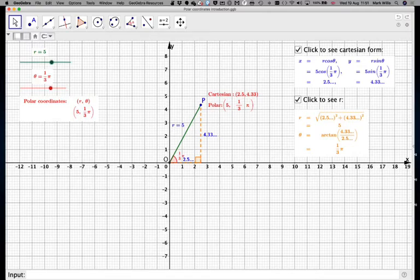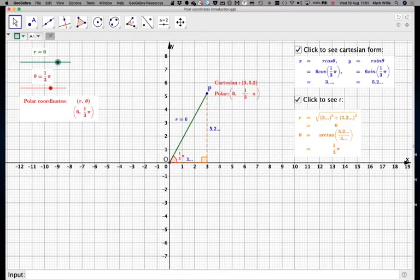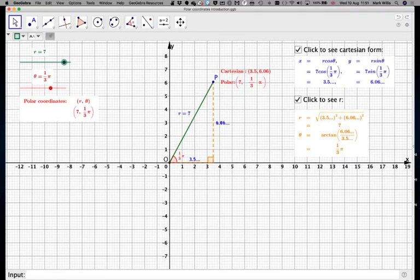Now this GeoGebra app looks quite good because you can change the length of the line. So now it's 6. I can make it 7 if I wanted to, and everything will change with it.